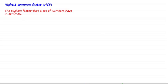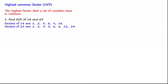So let's have a look at an example. Find the highest common factor, or HCF, of 18 and 24. The first thing we do is list the factors of each number. The factors of 18 are: 1, 2, 3, 6, 9, and 18.